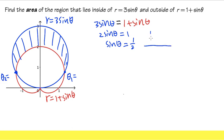Here's the reference triangle. The opposite side is 1, the hypotenuse is 2, so this is a 30-60-90 special right triangle, meaning this angle is π/6.